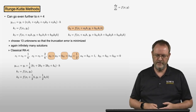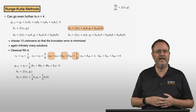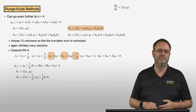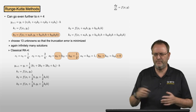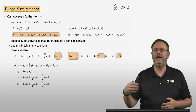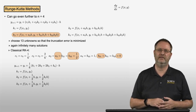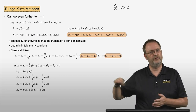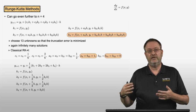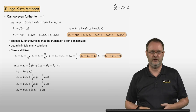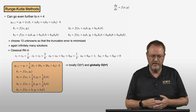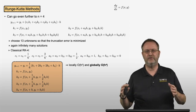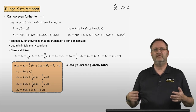For the classical RK4 method: k_1 = f(x_i, y_i); k_2 = f(x_i + one-half h, y_i + one-half h k_1); k_3 = f(x_i + one-half h, y_i + one-half k_2 h); k_4 = f(x_i + h, y_i + k_3 h). These k values plug into y_{i+1} = y_i + one-sixth (k_1 + 2k_2 + 2k_3 + k_4) times h. This method is locally fifth-order, and since we classify by global error, it is globally fourth-order.